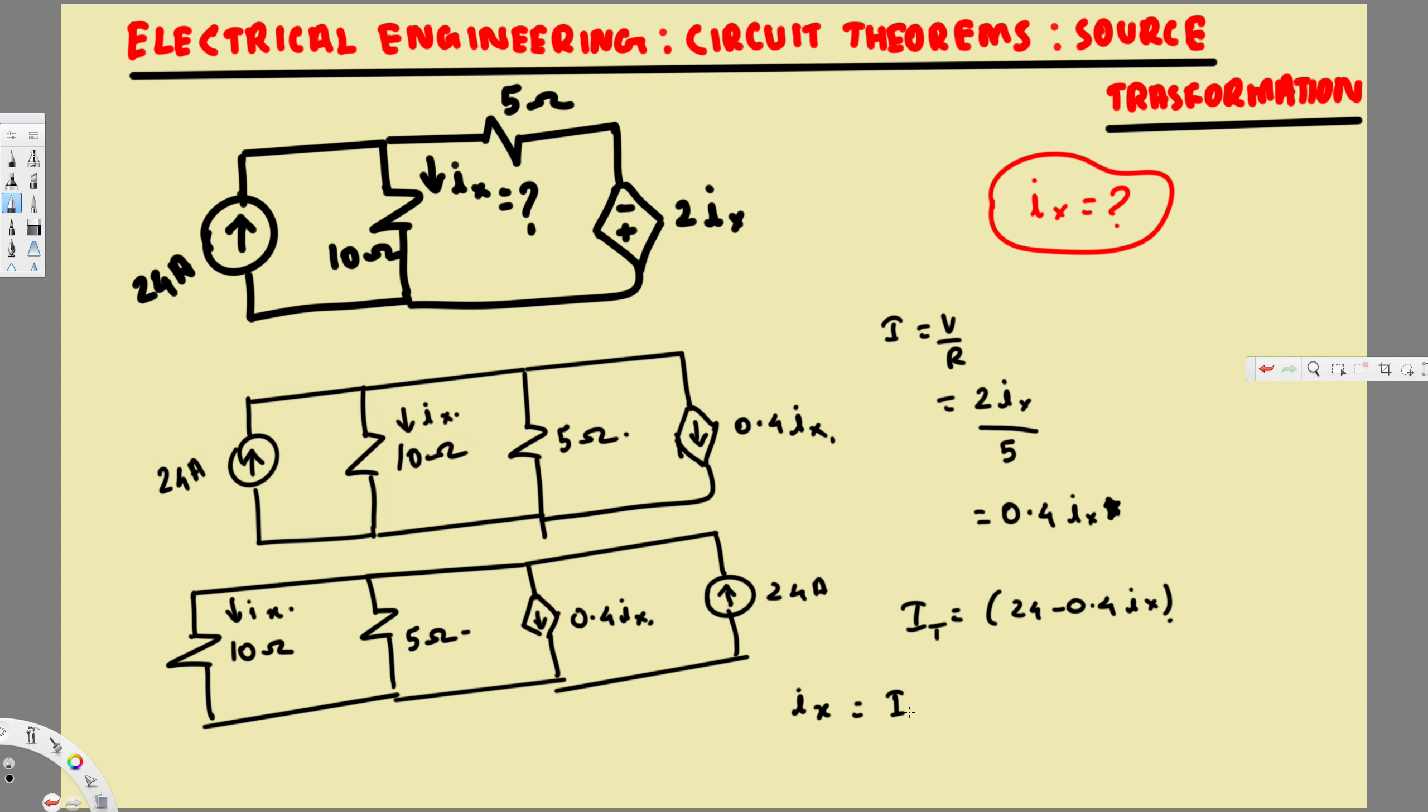So the other branch resistance is 5 ohm, and the addition of 10 ohm and 5 ohm is 15. So I total we know, and let's plug in the values.